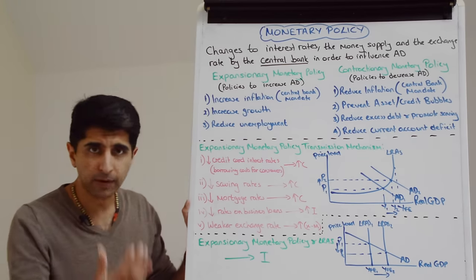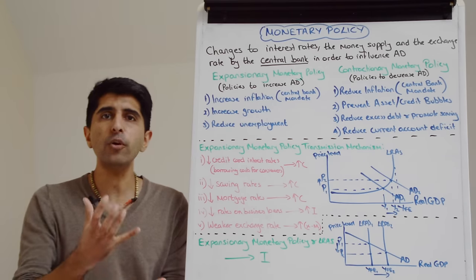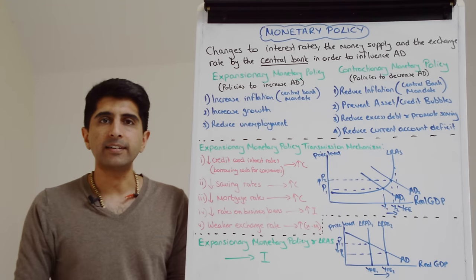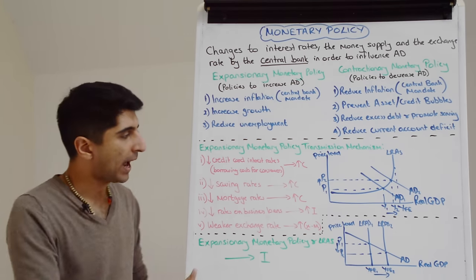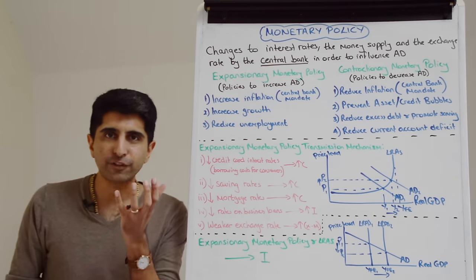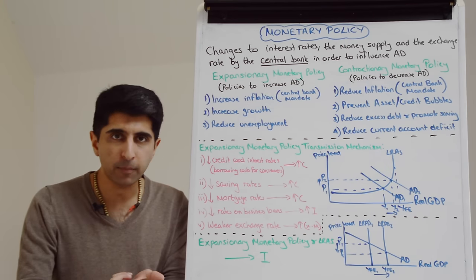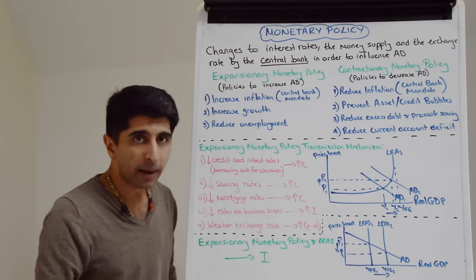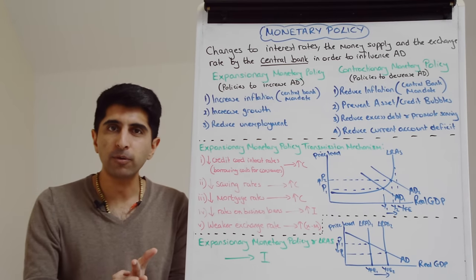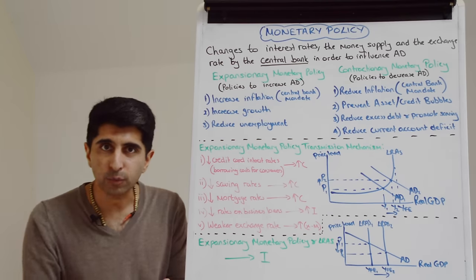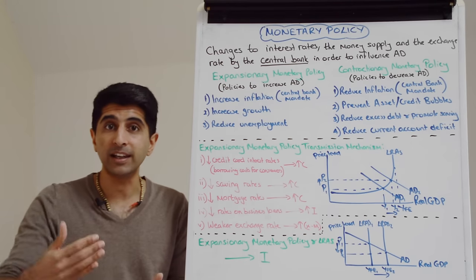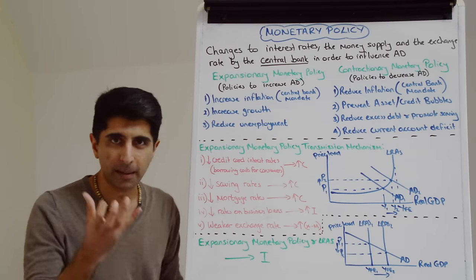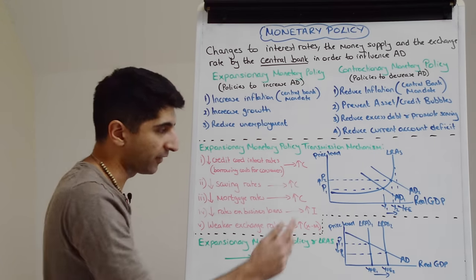As central banks cut their interest rate, we can expect mortgage rates across the economy to come down as well. A mortgage is just a loan that individuals take out when looking to buy a house. For households with tracker rate mortgages or variable rate mortgages, these have interest rates that follow the central bank rate. So if the central bank rate is cut, tracker and variable rate mortgages will come down too, meaning households will be paying less monthly towards their mortgage payments. That gives them more disposable income, increasing their marginal propensity to consume and boosting consumption.